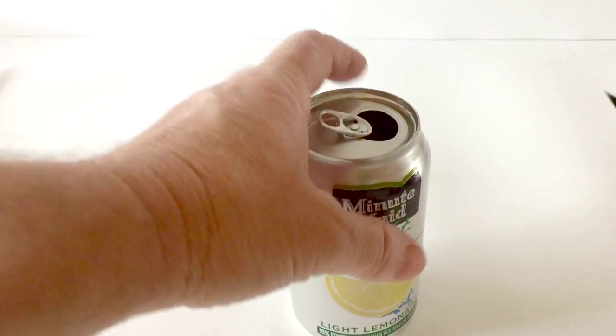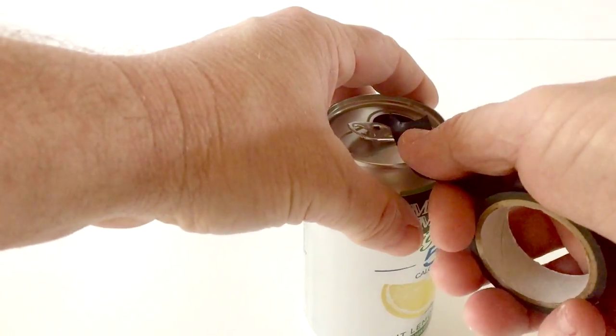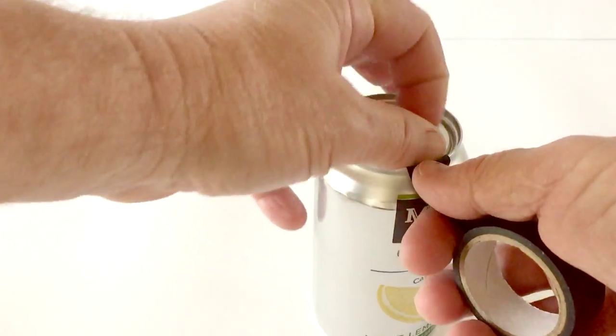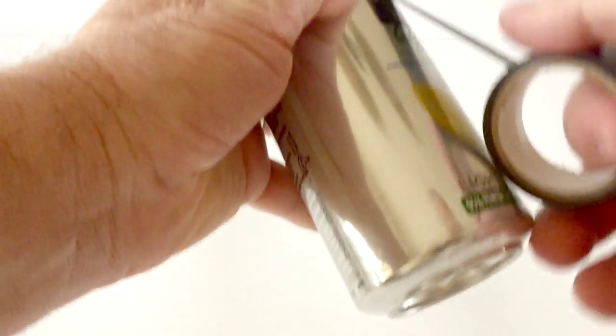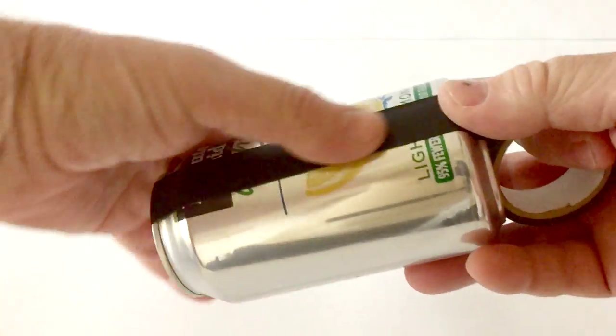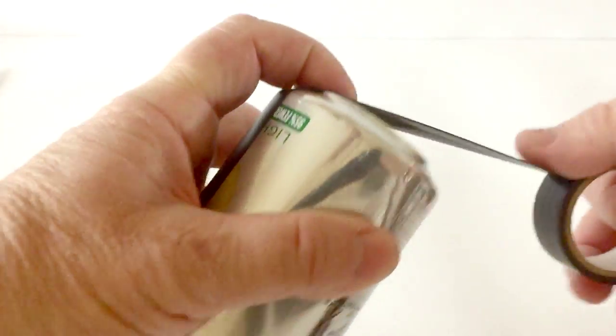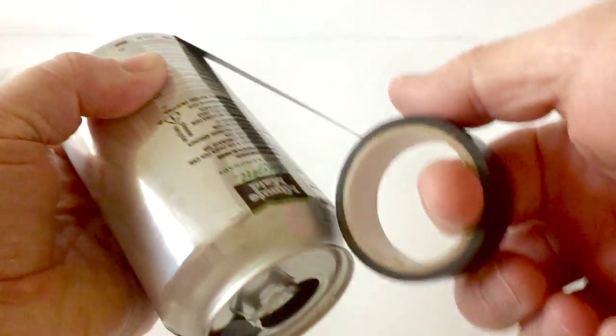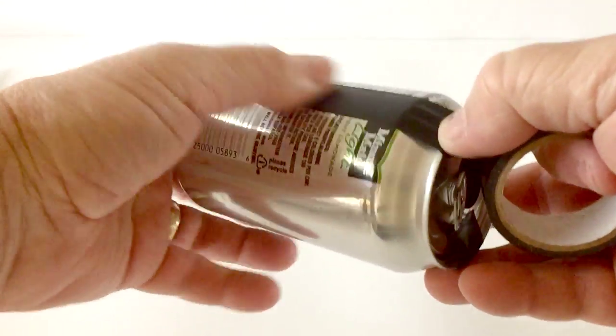What you're going to do is take your aluminum can and some electrical tape and we're going to tape the can from the top all the way to the bottom and back up to the top again. This is just going to give us a nice marking where we're going to use our box cutter to cut out a piece of the aluminum can, which will eventually be our sail.